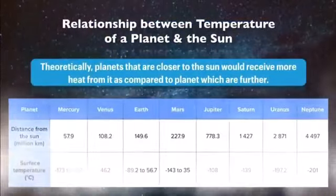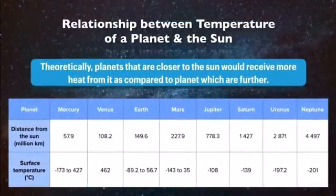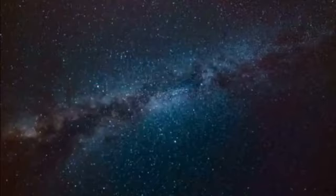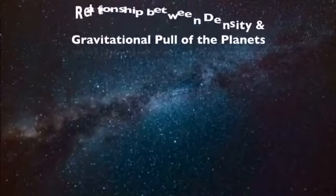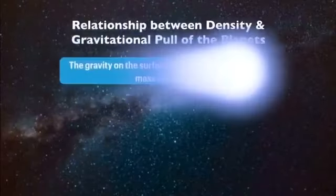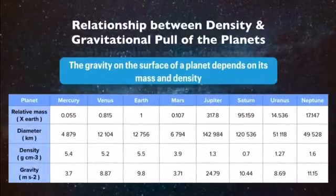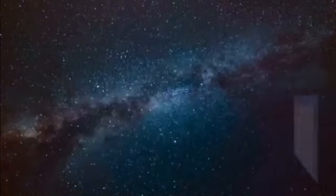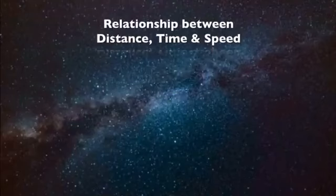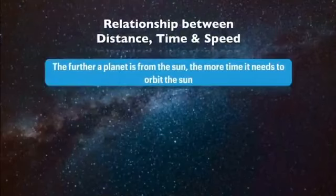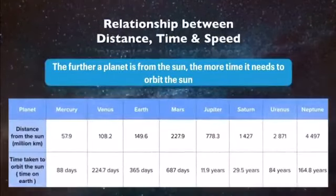Theoretically, planets that are closer to the sun will receive more heat from it as compared to planets which are farther. The gravity on the surface of a planet depends on its mass and density. The further a planet is from the sun, the more time it needs to orbit the sun.